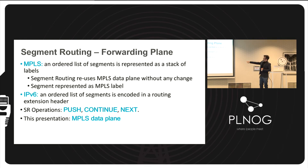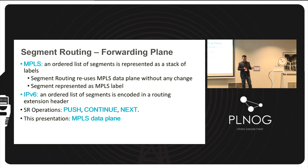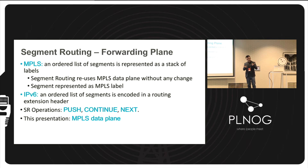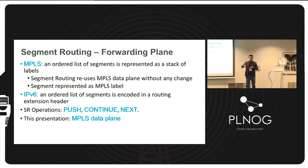There are three SR operation types. Push is the traditional push: you push a label onto the packet and forward based on that label. Continue is a swap operation: you receive a packet with a label, swap it for a new one, and continue. Next is a pop operation — used in penultimate hop popping — where you are close to the destination, pop the label, and forward as a pure IP packet.